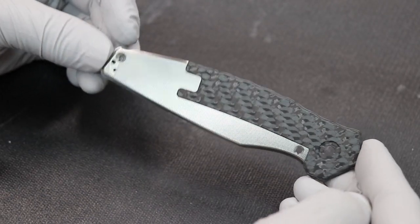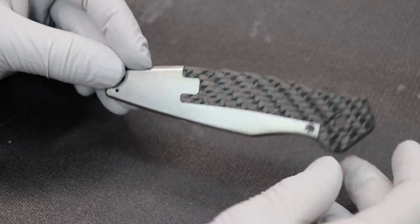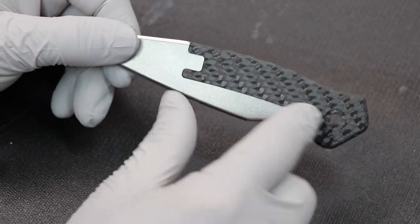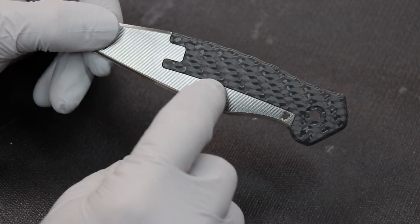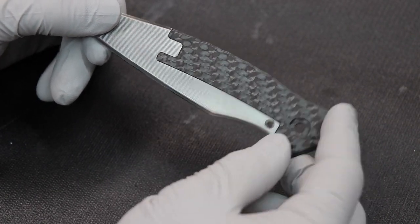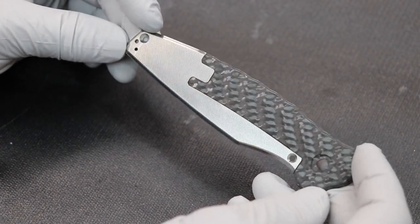So here we have the new design and as you can see the lock bar is now part of the frame. By making a two-piece handle scale I was able to minimize the gap. It still has a little bit there just for clearance but it maintains the overall look of the knife and its shape and function.